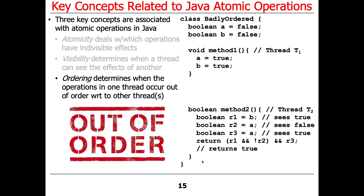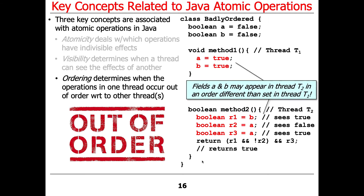The third problem, which is even more subtle and pernicious, is ordering — determining when the operations in one thread occur out of order with respect to other threads. Here's a scenario with two fields, A and B, both set to false initially. In method one, thread t1 sets A to true and B to true. The question is when will method two, called from thread t2, see those changes? It could very well turn out that B is set to true but A remains false — even though we clearly set A to true before B in thread t1. The order in which those changes get propagated to thread t2 is undefined. The hardware, the compiler, everything can work in clever, optimized ways and produce very weird results.